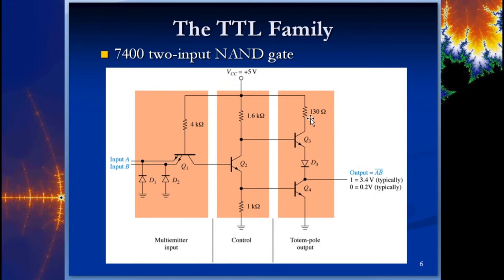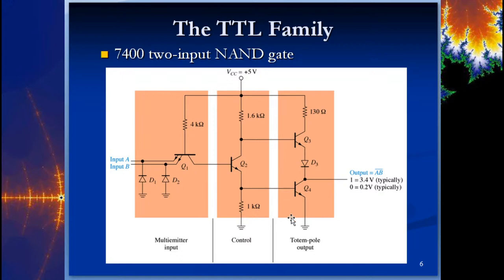Here's the totem pole output — we call it totem pole because it has multiple segments stacked on top of each other, like a real totem pole. We have one transistor: if there's enough current on the base it will activate a short between the collector and the emitter, allowing current to flow. Either Q3 or Q4 is on — not both — because there are only two output states. If Q3 is on, Q4 is off and the signal goes out the output.